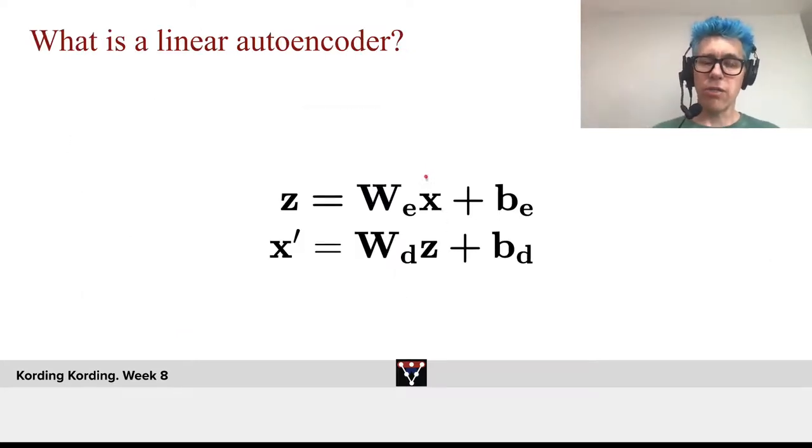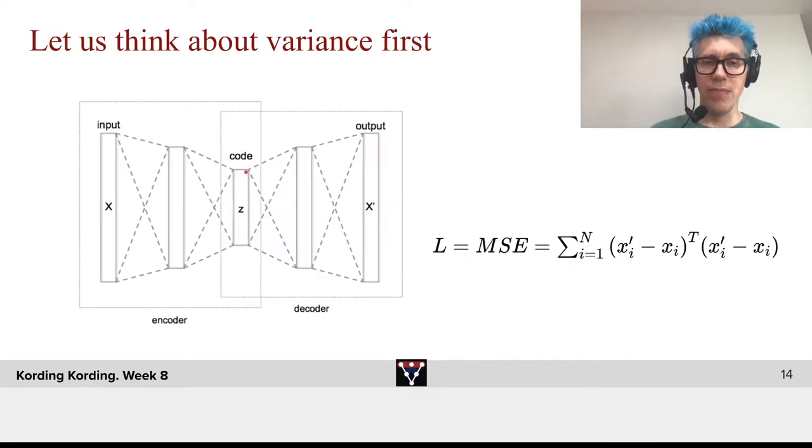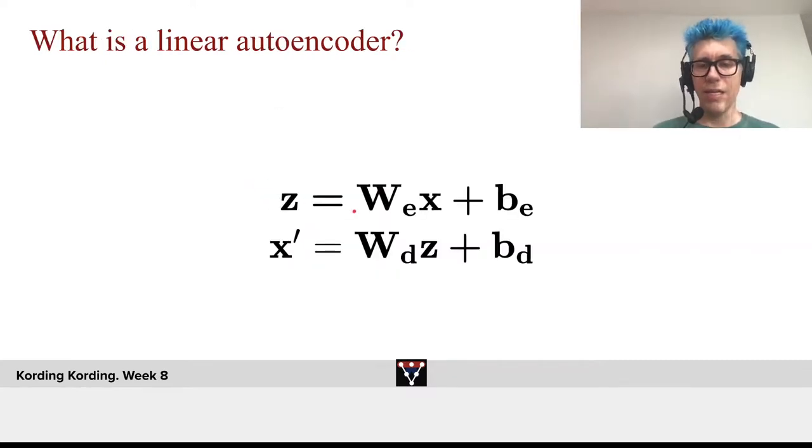What's a linear autoencoder? We can say we take that code Z that we have in between here, and we say that that code is an encoding weight times the input vector X plus a bias.